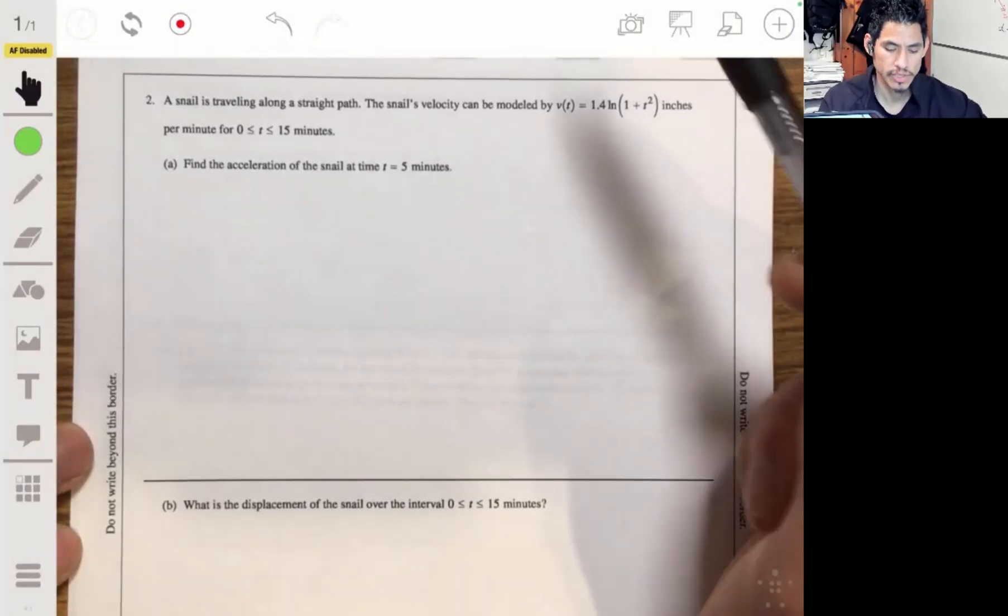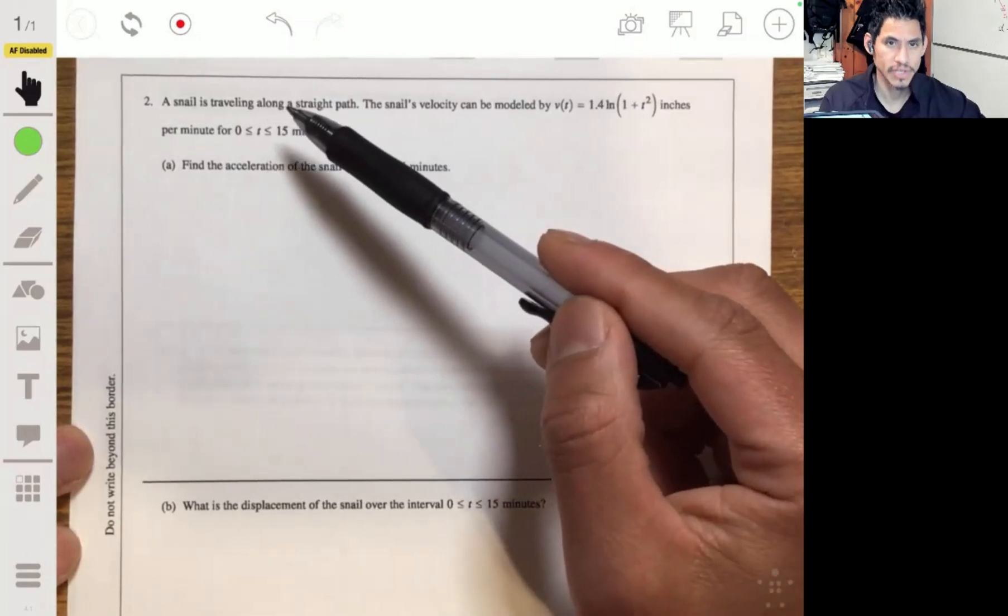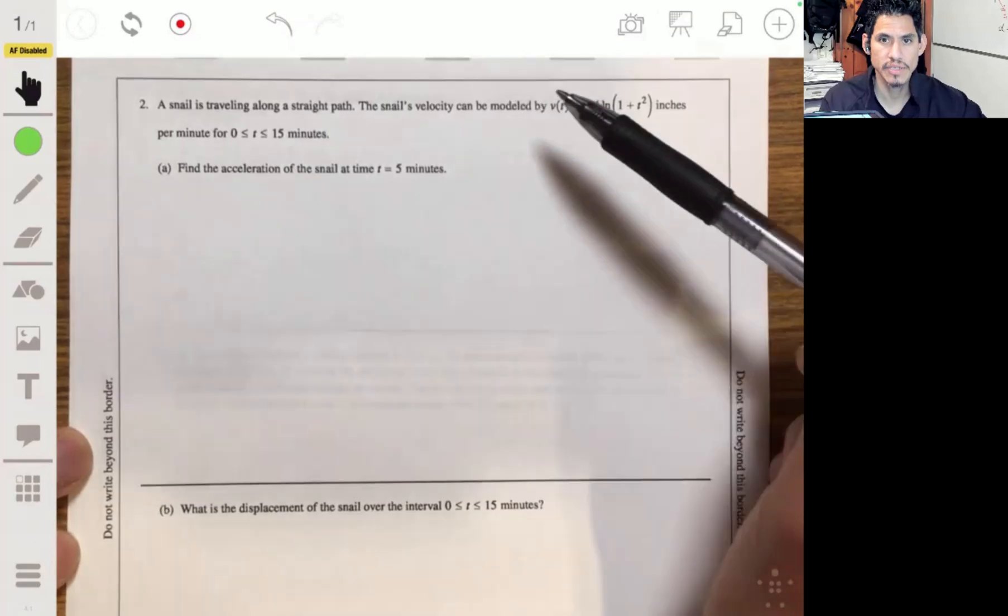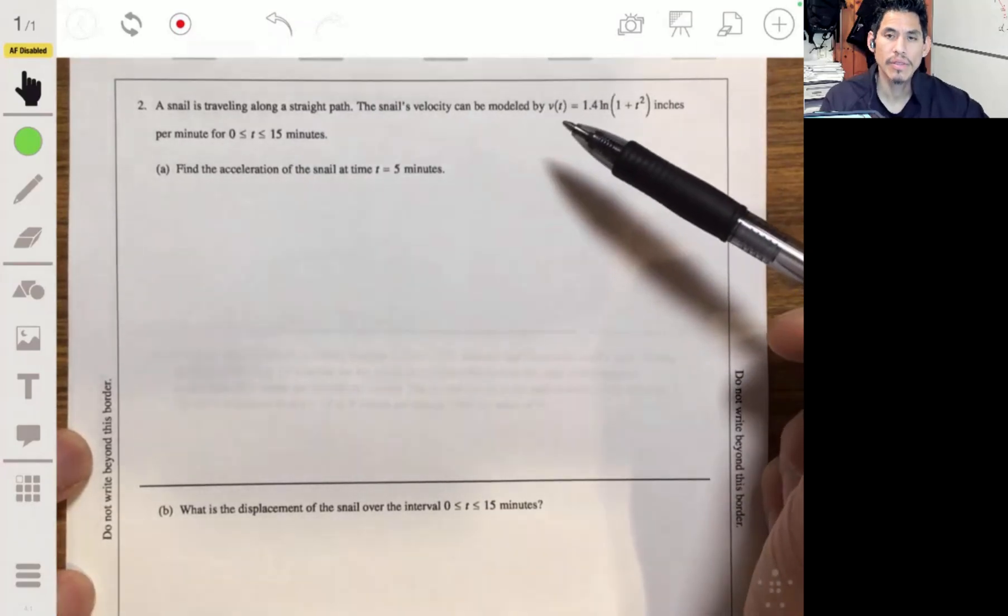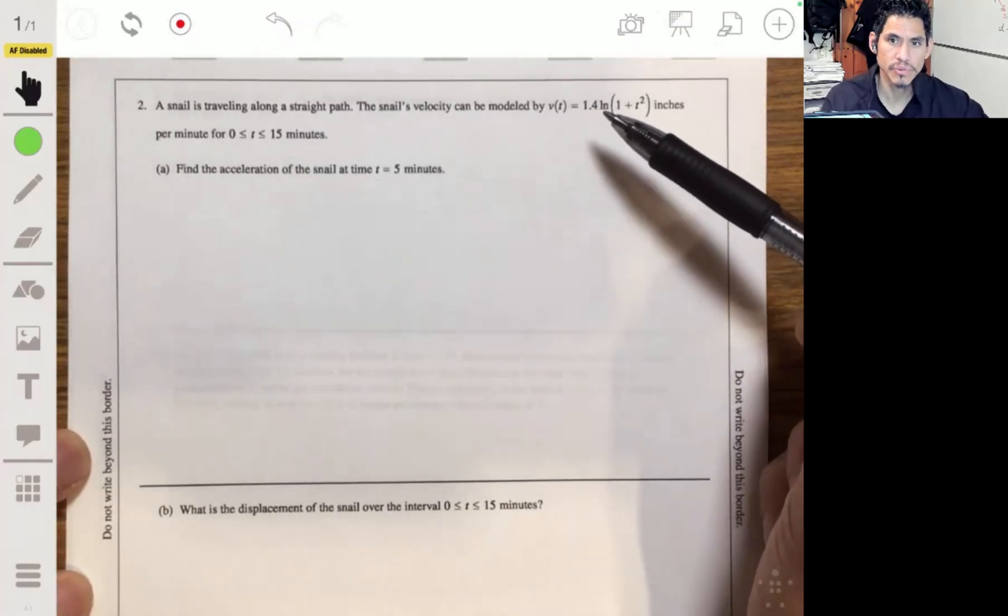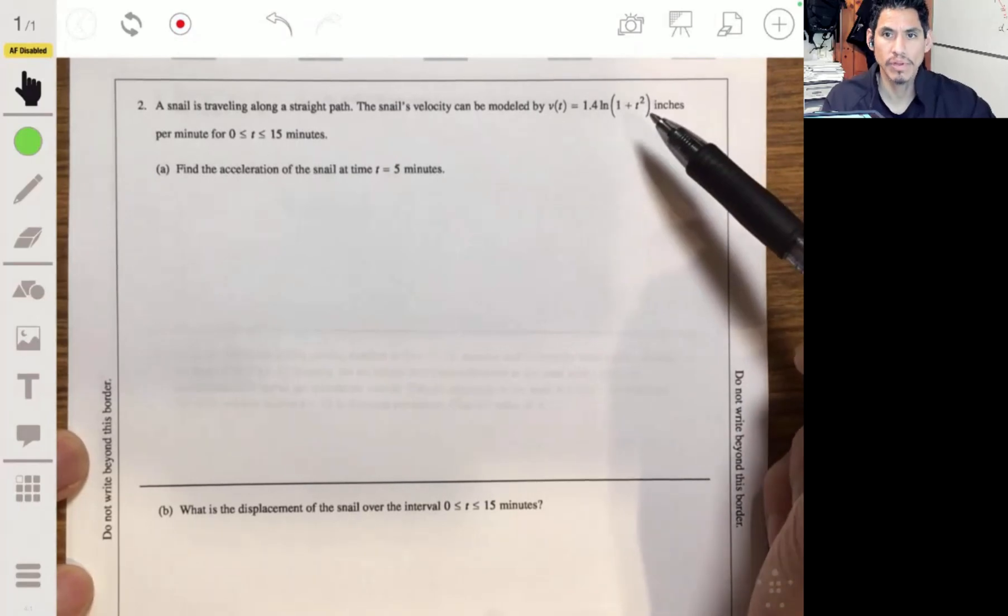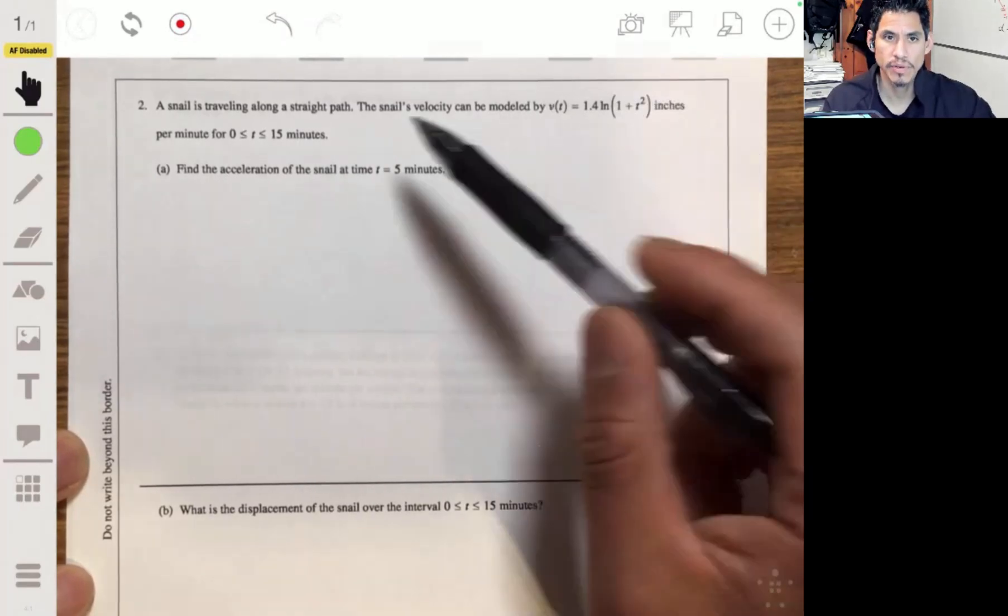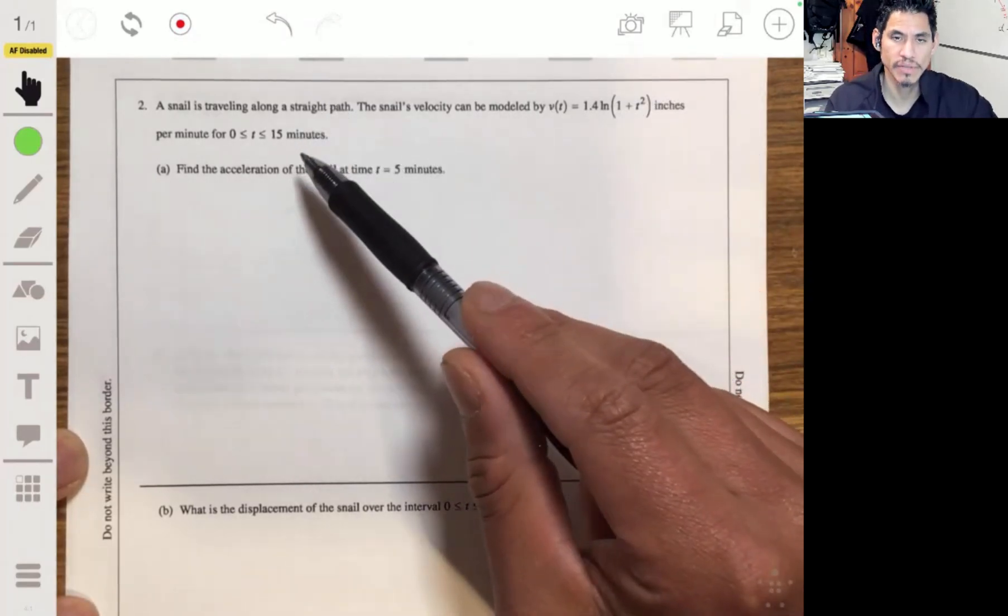All right, problem two. We have that a snail is traveling along a straight path and its velocity can be modeled by v(t) = 1.4 ln(1 + t²) inches per minute for t between 0 and 15 minutes.